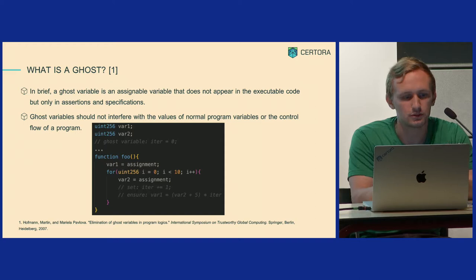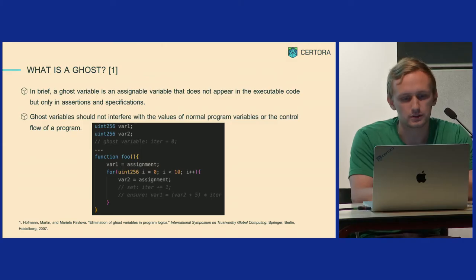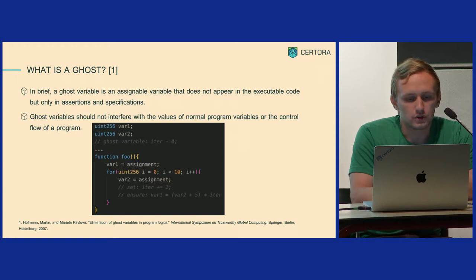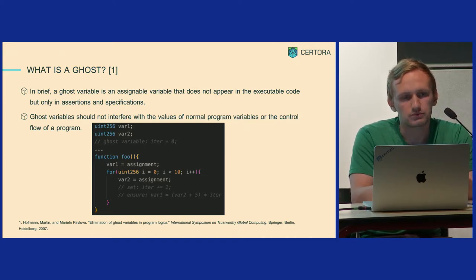And in that article, people say that in brief, ghost variables are assignable variables that don't appear in the executable code, but only in assertions and specifications. And the main point of the ghost is that they shouldn't interfere with the values of normal program variables or take control over the flow of the program. So, for example, this silly code does nothing, but let's say we have two variables, one and two, and in the function foo they have assignments.